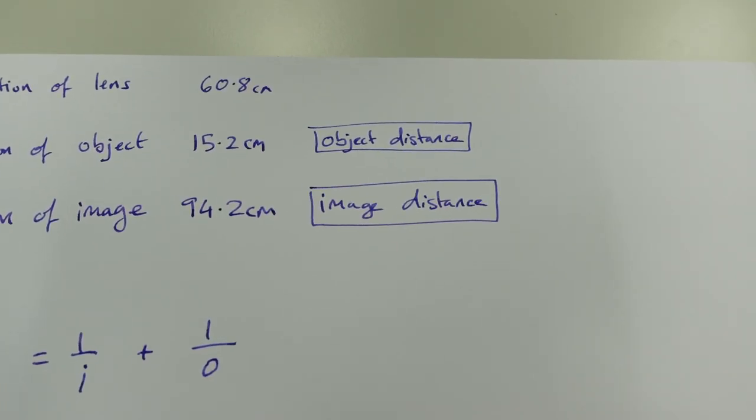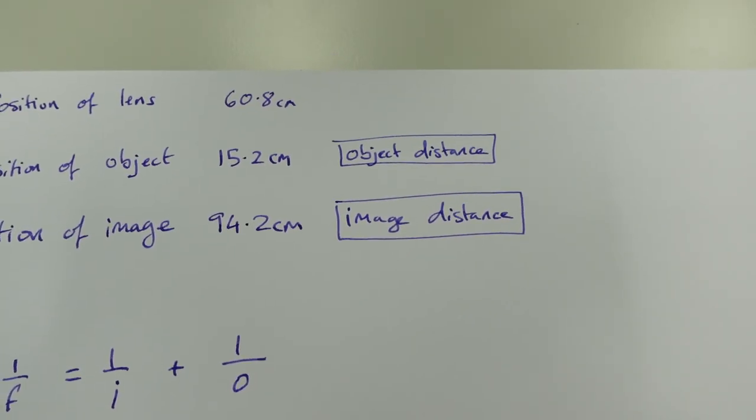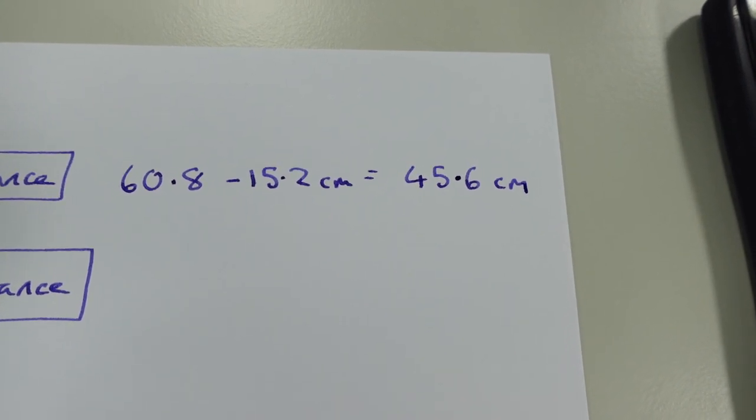In order to work out the object distance, what we have to do is you have to take the position of the lens, and then subtract 15.2 cm from it. That gives us 45.6 cm.